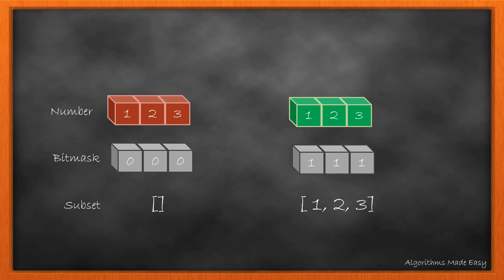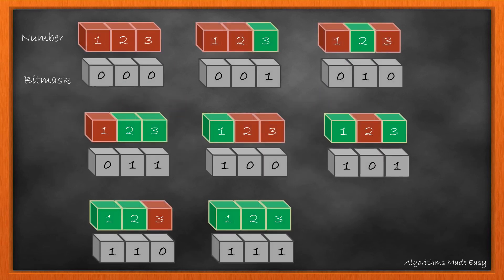For 1 to 3, the length of nums is 3, and we know that there are 2 raised to 3 possibilities. So if we write down all the numbers in binary from 0 to 2^3, we get the subsets as shown, where red represents absence and green represents presence of a number in the subset.